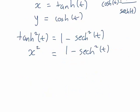We can rearrange this to make sech squared of t the subject. Doing algebraic rearrangement, we get sech squared t equals 1 minus x squared.